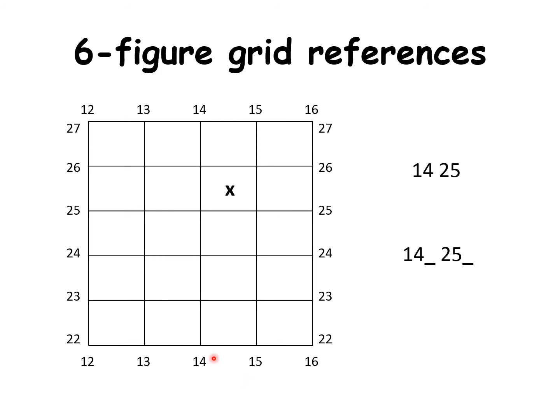X isn't on line 14 and it's not on line 15. It's actually between the two lines. So what we do is we divide this whole column here into another 10 divisions. So 14 would be 0. We say 0, 1, 2, 3, 4, 5 in the middle, 6, 7, 8, 9, 10. And you put the number that X is here and it would actually be 14, 5.